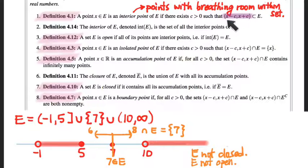For any value of C, how many points are within X minus C to X plus C? At least one. In fact, better than that. Infinitely many points. There are infinitely many real numbers between X minus C and X plus C.